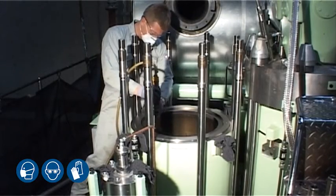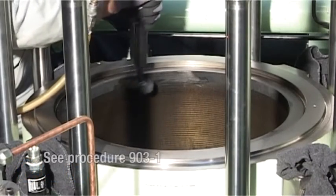Carefully remove any wear ridges at the top of the cylinder liner. See procedure 9031.